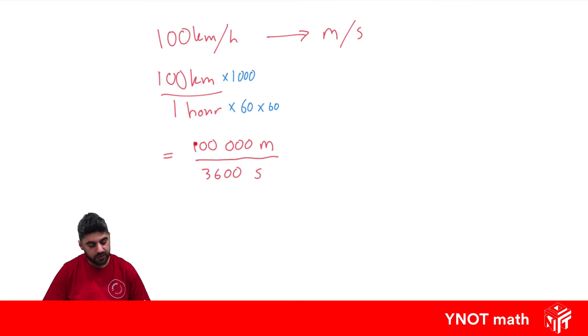And once you do that, all you have to do is divide these numbers with each other. So we just do 100,000 divided by 3600. And if we do that, we get 27.8 metres per second to one decimal place.